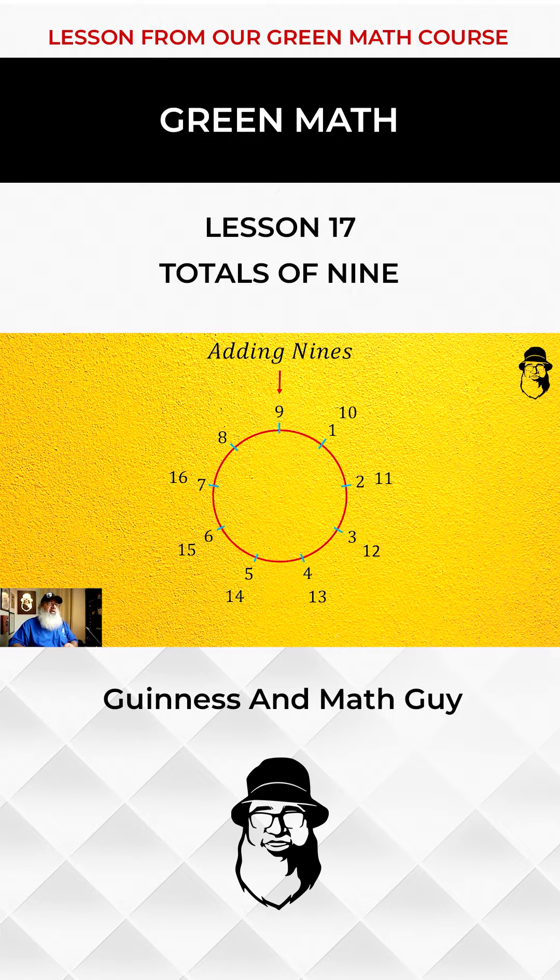So after 10 we expect to get 19 because we have added 9 to 10, and after 19 the next number on the 1 branch will be 28, that is 19 plus 9. Now if we find the digit sums of all the numbers on the 1 branch, we'll find they are all the same, and we can see that they are all 1.